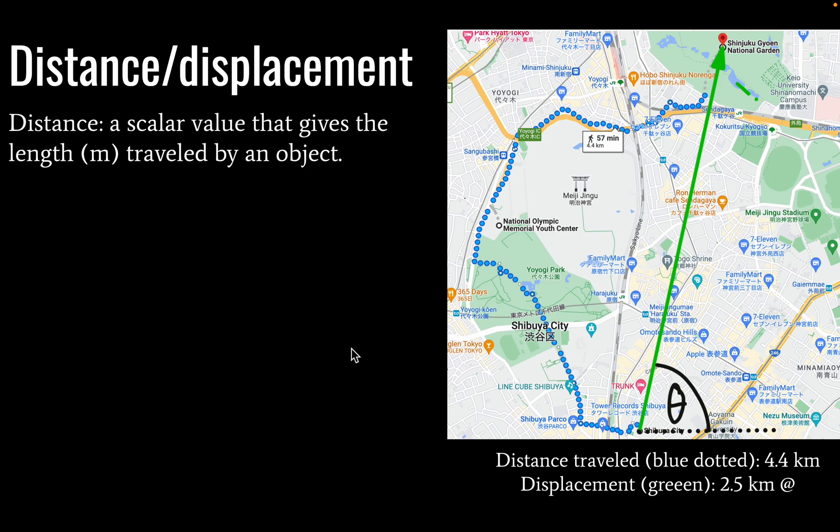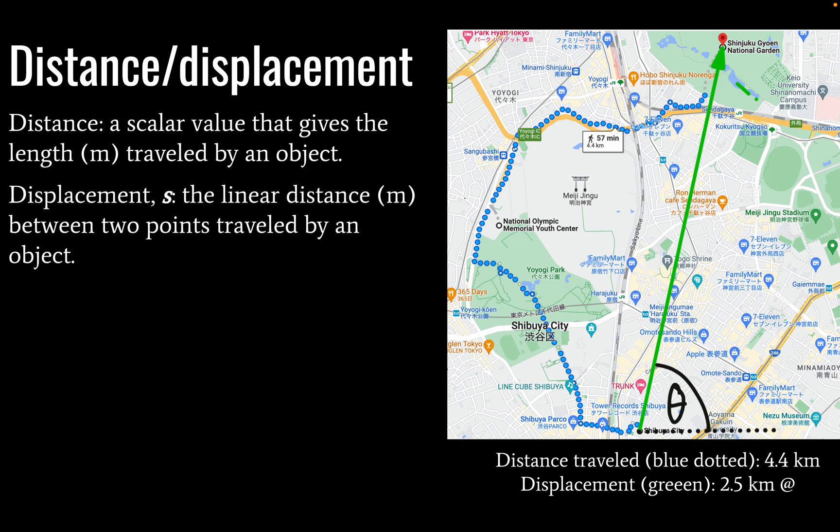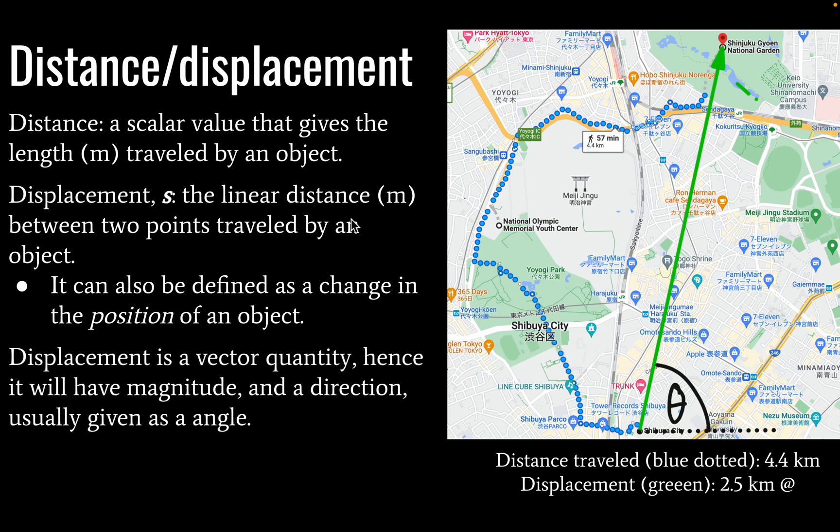Okay, so let's talk a little more. Distance is a scalar value that gives the length in meters traveled by an object. Displacement is the linear distance between two points traveled by an object. Okay, so we can define it as the change in the position of an object. So you could use your coordinates here, x, y coordinates here, and x, y coordinates here, and find the change between those x and y coordinates, and that would give you displacement.